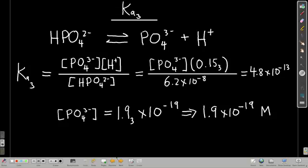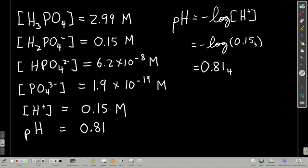Now we pretty much know everything we asked. Equilibrium concentration of phosphoric acid, the hydrogen phosphate, hydrogen phosphate, phosphate, hydrogen ion concentration. Oh yeah, the pH, just negative log of the concentration of hydrogen ion. So negative log of 0.15 is 0.81. We got everything.